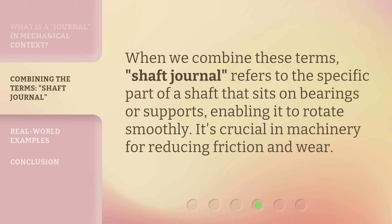When we combine these terms, shaft journal refers to the specific part of a shaft that sits on bearings or supports, enabling it to rotate smoothly. It's crucial in machinery for reducing friction and wear.